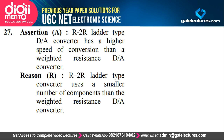Assertion: R2R ladder type DA converter has a higher speed of conversion than a weighted resistance DA converter — this is correct, as each bit is handled individually and fast. Reason: R2R ladder uses a smaller number of components — this is incorrect. In R2R, each bit requires one R and one 2R, giving two elements per bit, whereas weighted resistance DAC uses resistors equal only to the number of bits. So assertion is correct, reason is wrong — option C.